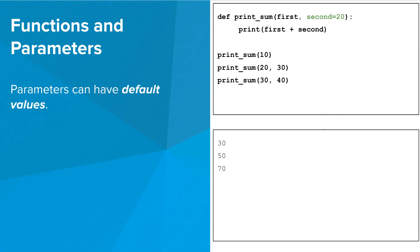Parameters can also have default values. Notice that inside the parentheses of print_sum is what looks like an assignment statement that says that if the second parameter value is not provided by the arguments, it should have 20 by default.